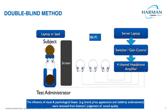We did a test where listeners compared headphones four at a time. They were not aware of the brands — the test administrator would substitute headphones on the listener as they selected between four different choices. This was very labor intensive and tedious, but we were able to get results. However, we learned that even though listeners weren't aware of the brand or price, after a while they learned the headphone by its feel — how much it weighed, the clamping force — and could recognize it. So in this sense, it's no longer truly a blind test; listeners were identifying headphones based on factors other than sound quality.